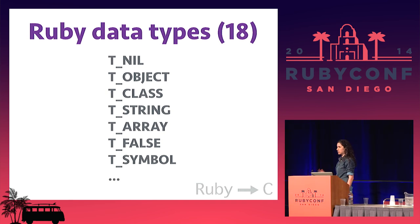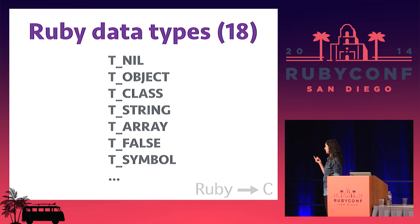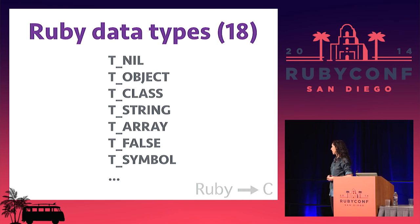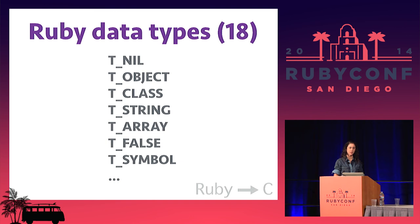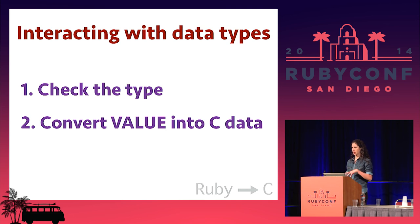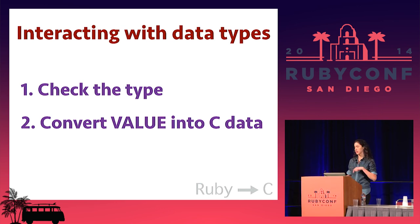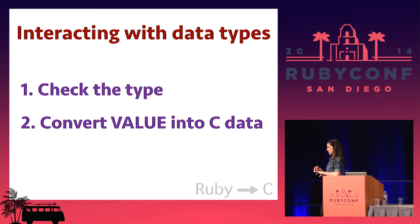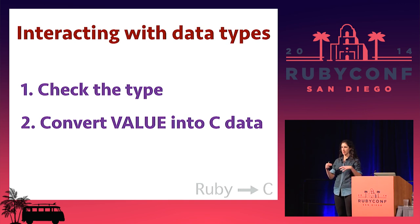Each Ruby object, when you're working with it in C code, will have an integer flag — an identifier — that tells you how to work with it and how to convert it into C data. There are 18 of them corresponding to the Ruby core objects: nil, object, class, string, array, false, symbol, and so on. These are integer constants that tell you how the object should behave and how you can use it. The go-between for converting Ruby objects to and from C data is this generic C structure called VALUE.